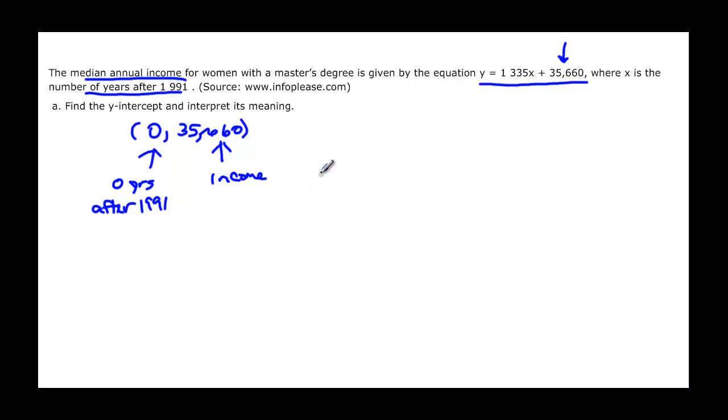So if we put that all together, then we can say that in 1991, that's year 0, the median income was $35,660.